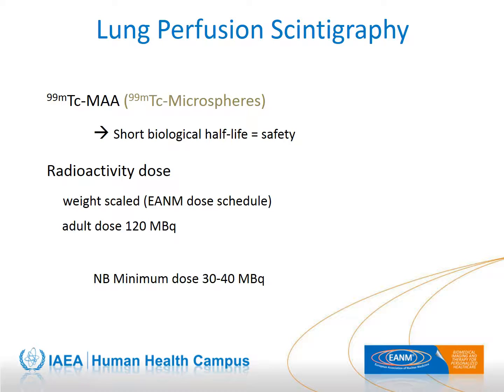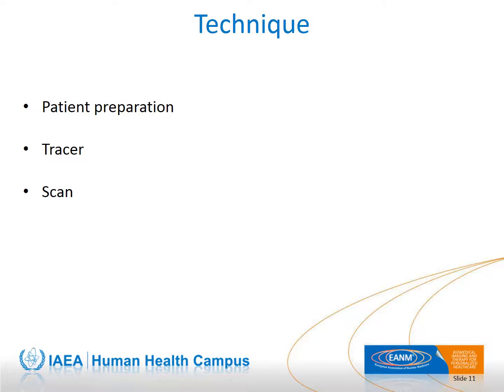Lung perfusion scintigraphy is well known and widely recognized for its use in congenital heart disease. Macro-aggregates of albumin are preferable to microspheres because their degradation is faster, further reducing risk in case of a right-to-left shunt. We will consider the different steps involved in carrying out a pulmonary perfusion scintigraphy in children affected by congenital heart defects.